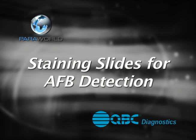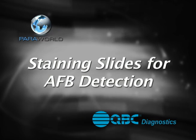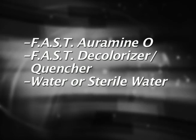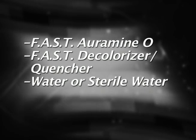Staining slides for AFB detection using the FAST method requires the following materials: FAST Armin O stain, FAST decolorizer and quencher, and water or sterile water if possible.